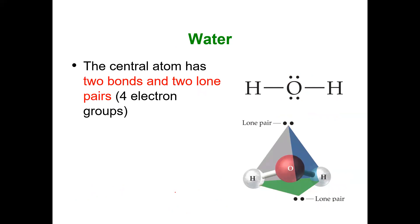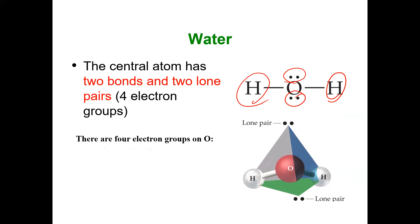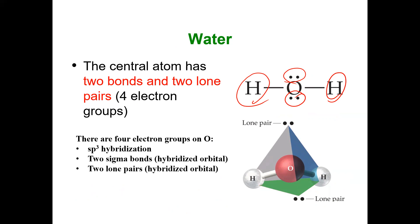Water has four electron groups — two lone pairs and two atoms — giving sp3 hybridization with two sigma bonds and two lone pairs.